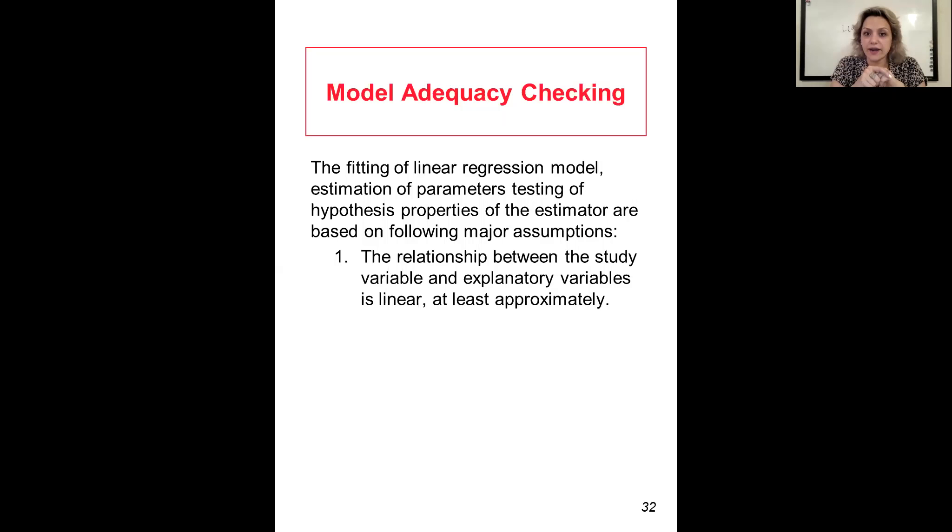The relationship between the study variable and explanatory variables is linear, at least approximately. The error term has zero mean, the expected value of error is zero, and it has a constant variance, sigma squared times I, or the diagonal elements of your variance-covariance matrix.